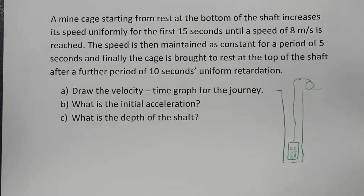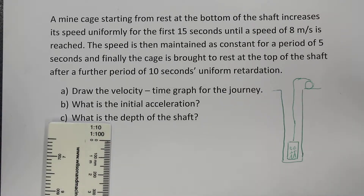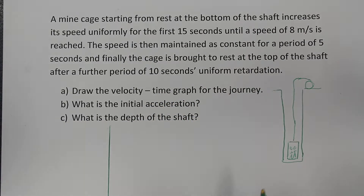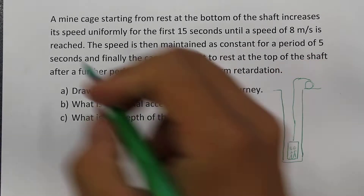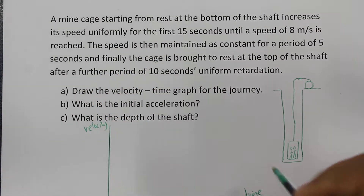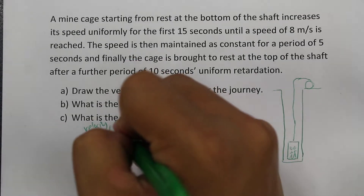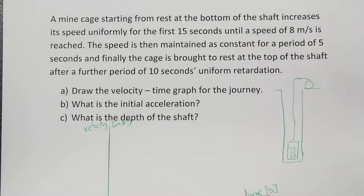Our first step is to describe the motion — we'll draw the velocity versus time graph. I'll draw a y-axis and x-axis, with velocity on the y-axis and time on the x-axis. Time will be measured in seconds and velocity measured in meters per second, or ms⁻¹.